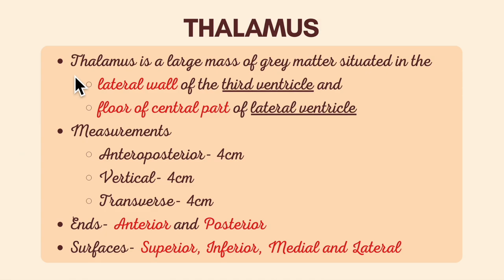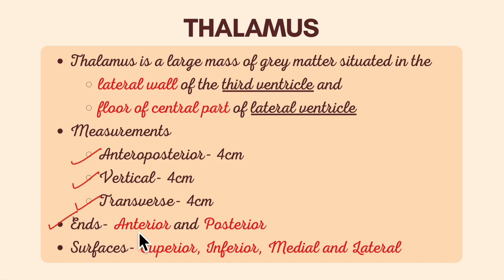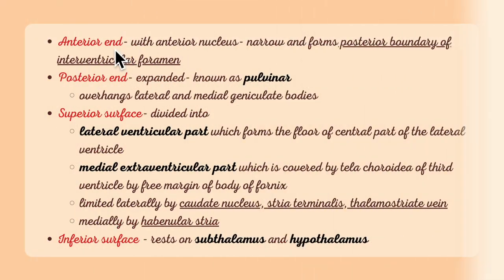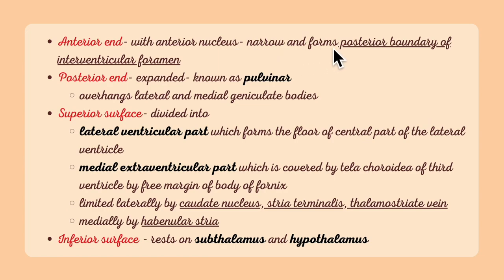Concising the points learned so far: the thalamus is a large mass of grey matter situated in the lateral wall of the third ventricle and the floor of the central part of the lateral ventricle. Its measurements are anteroposteriorly 4 centimeters, vertically 4 centimeters, and transversely 4 centimeters. It has two ends — anterior and posterior — and four surfaces: superior, inferior, medial, and lateral. The anterior end with the anterior nucleus is narrow and forms the posterior boundary of the interventricular foramen. The posterior end is expanded and is known as the pulvinar.